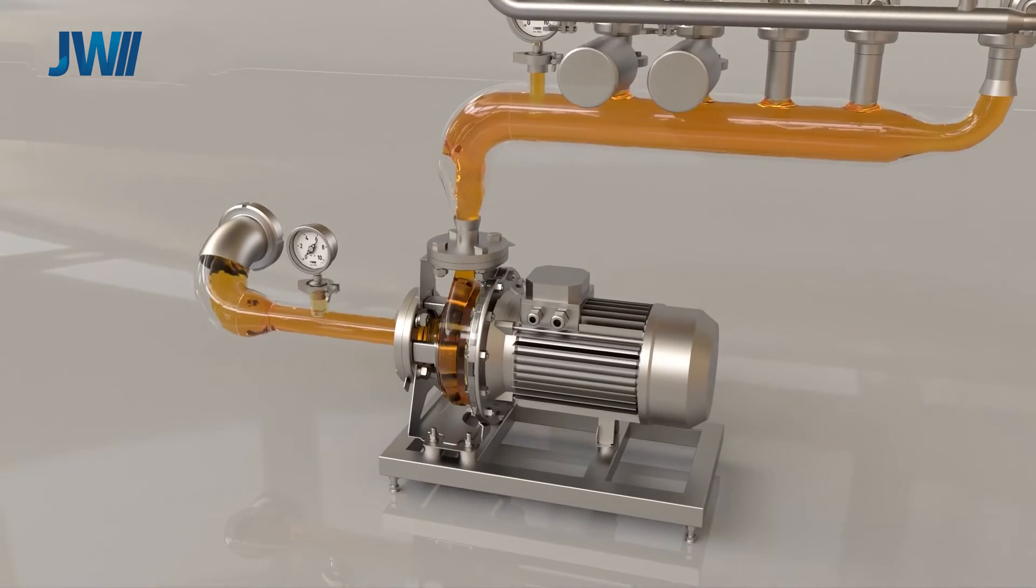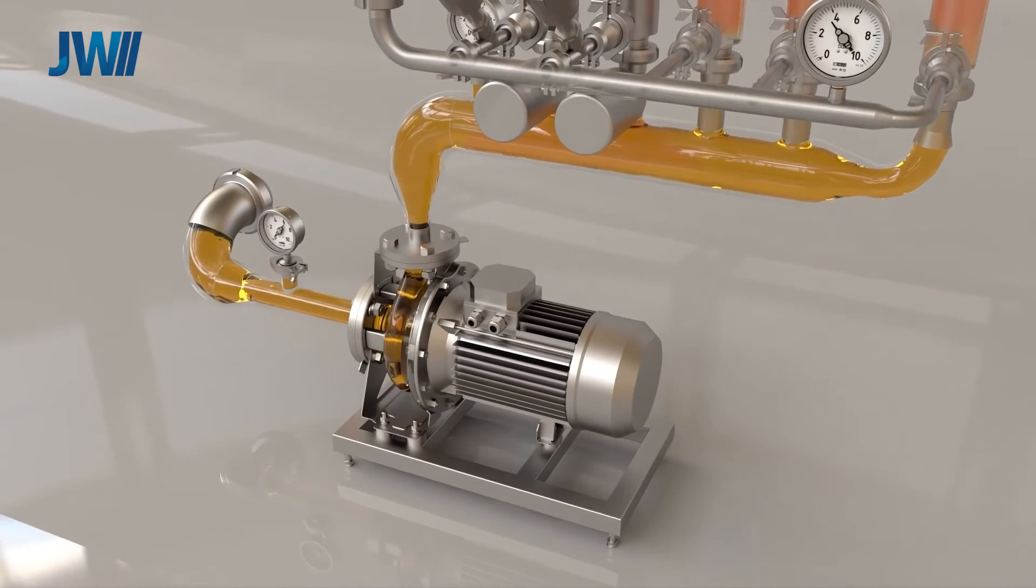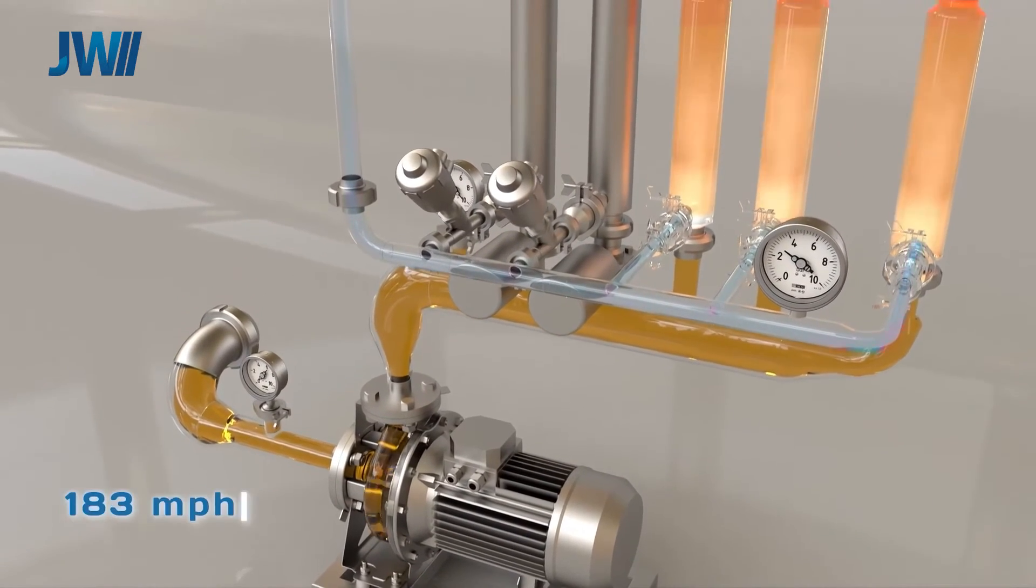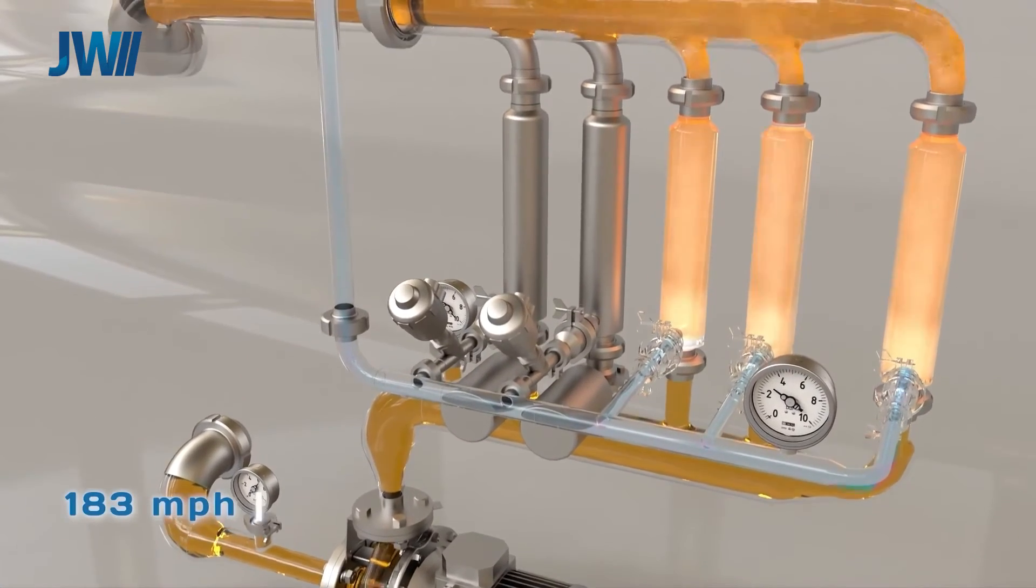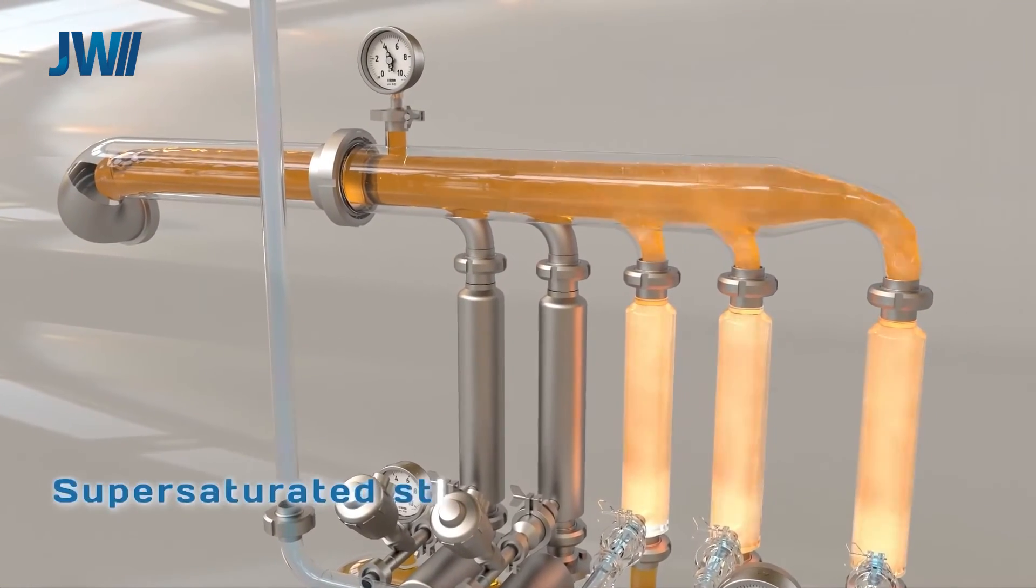The liquid then accelerates to 183 miles per hour in a patented Subcarb device. This turns the liquid into a state of wet saturated steam or vapour that is a gaseous state. This ensures the CO2 gas is mixed with vapour, thus ensuring efficient bonding at the molecular level.